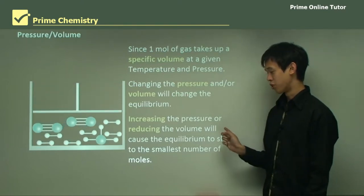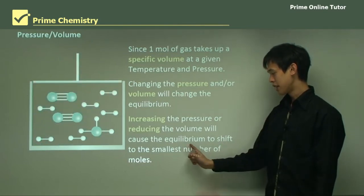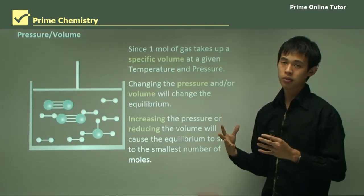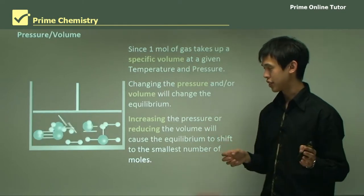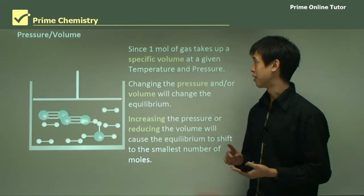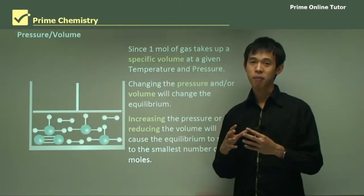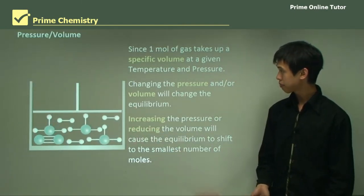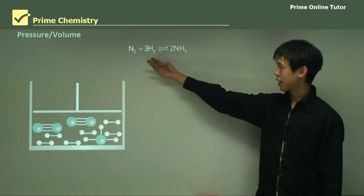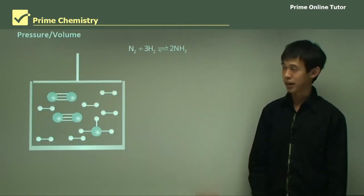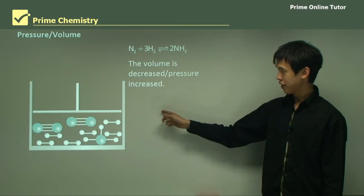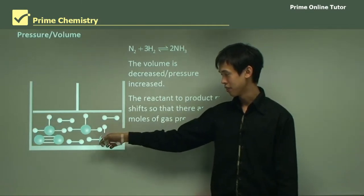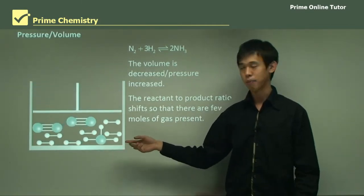Increasing the pressure or reducing the volume will cause the equilibrium to shift to the smallest number of moles, because one mole of gas takes up a defined amount of space — so the minimum number of moles takes up the minimum space. An example is the Haber process: the volume is decreased but the pressure increases, so the reactant-to-product ratio shifts so that there are fewer moles of gas present.